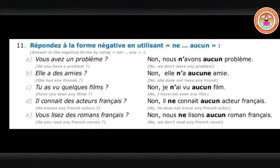First question: Vous avez un problème? — un problème is masculine, so whenever you replace it you say ne...aucun. Answer: Nous n'avons aucun problème — we don't have any problem. The question is in second person plural, so the answer is in first person plural. Next: Elle a des amies — she has some friends. The spelling of amies is A-M-I-E-S, so it is feminine plural. But aucune accepts gender — so the answer is: Elle n'a aucune amie — she has no friend.